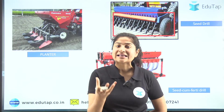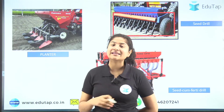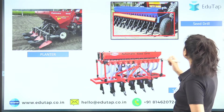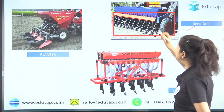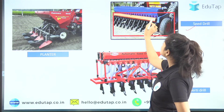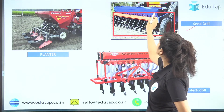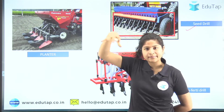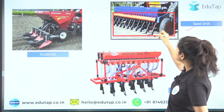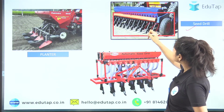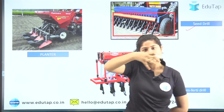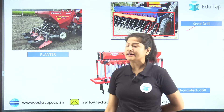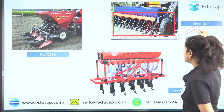Now depending on the size of seed, there are different categories. First is the seed drill — seeds are kept in a hopper and from a funnel opening the seeds are sown in a line-wise manner. This is a normal seed drill.